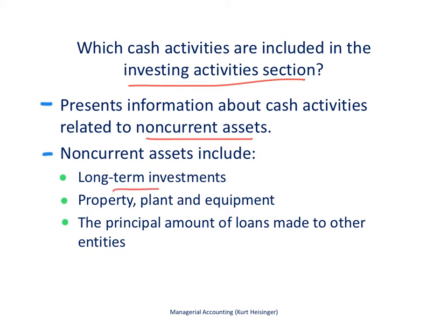This would include things like cash activity related to long-term investments. Perhaps we purchased stock in another company and intend to hold it for a long period of time — that cash outflow would go into the investing activities section. Or if we sold some long-term investments, the cash coming in would show up here. If we buy equipment for our business, that cash outflow goes here. If we sell a building, that cash inflow shows up in the investing activities section. If we made a loan to another entity, that cash outflow would show up here, and if we collected on that loan, the cash coming in would also show up in this section.